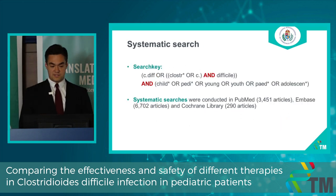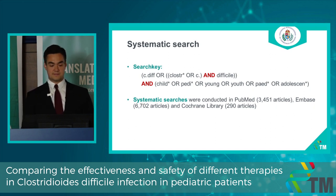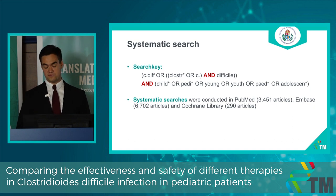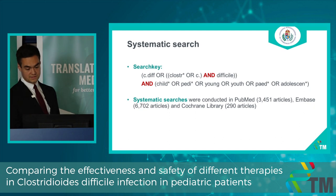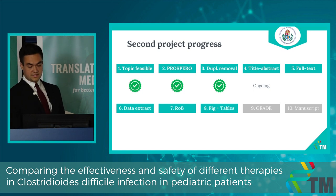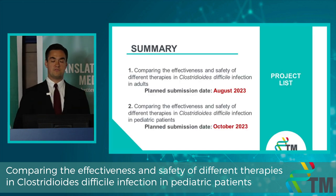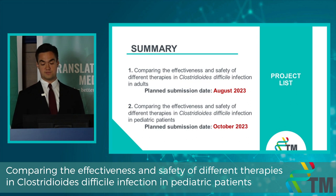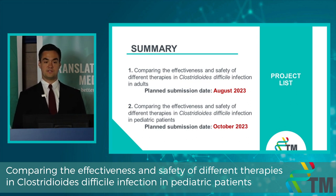We did our systematic search with a final search key in three big databases. After duplicate removal, we found around 8,000 articles. The title and abstract selection is ongoing. For summary, we would like to finish our first project in the summer of this year, and our second project by the end of this year as well.